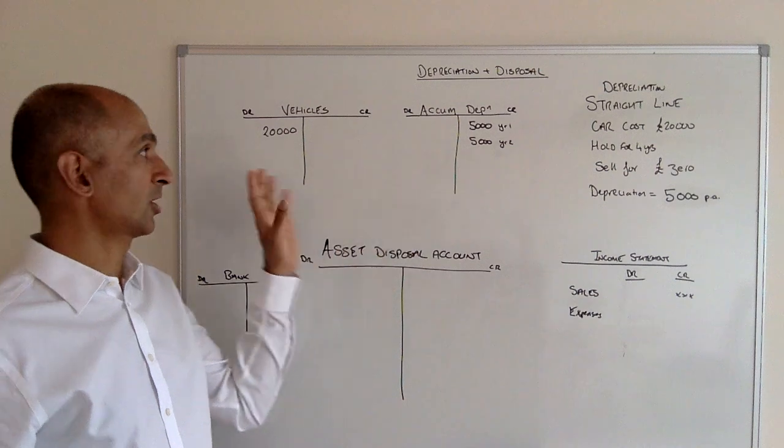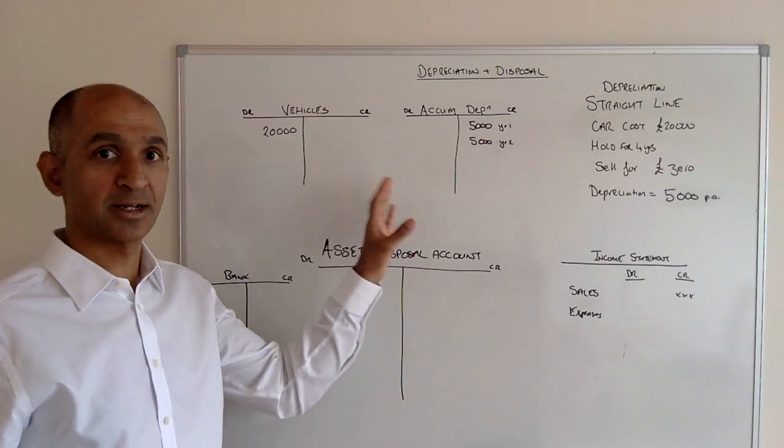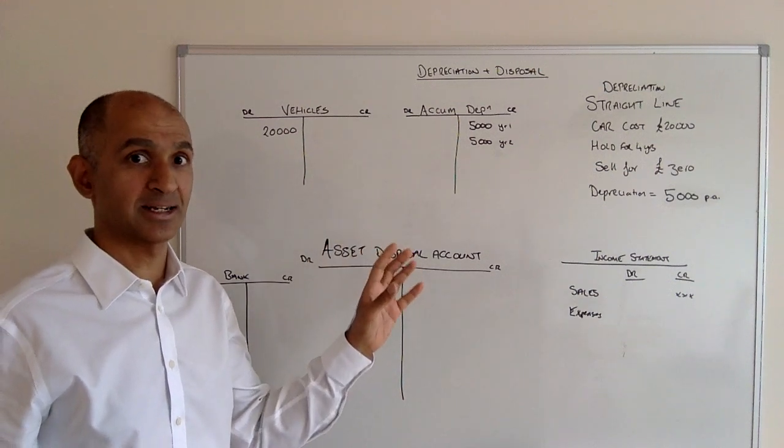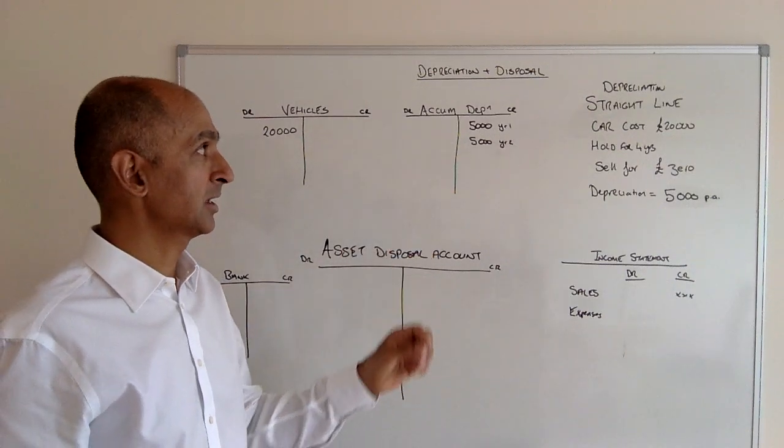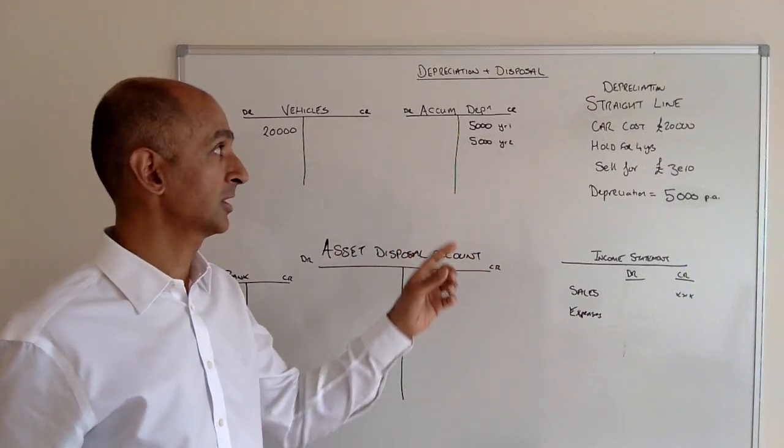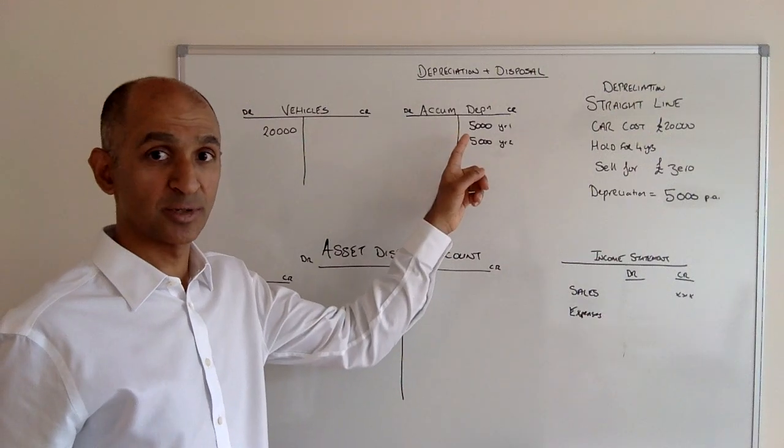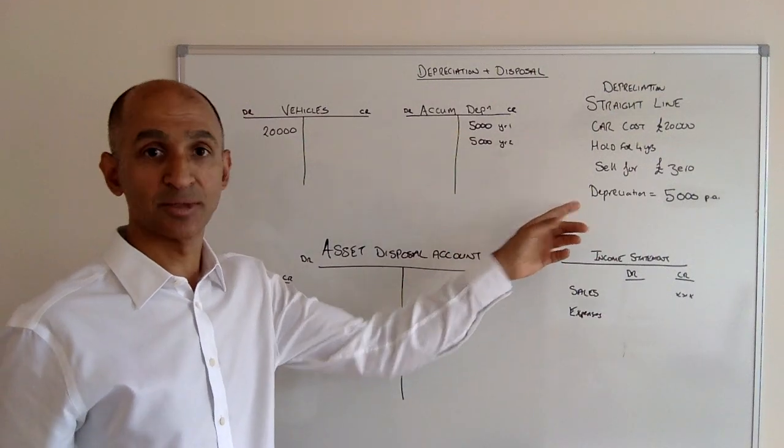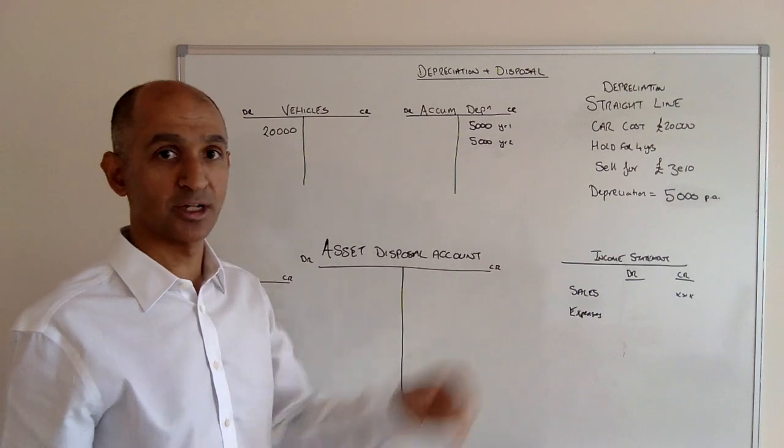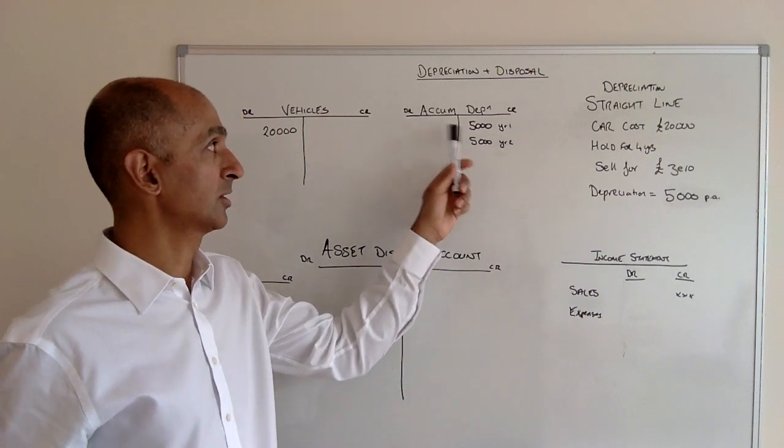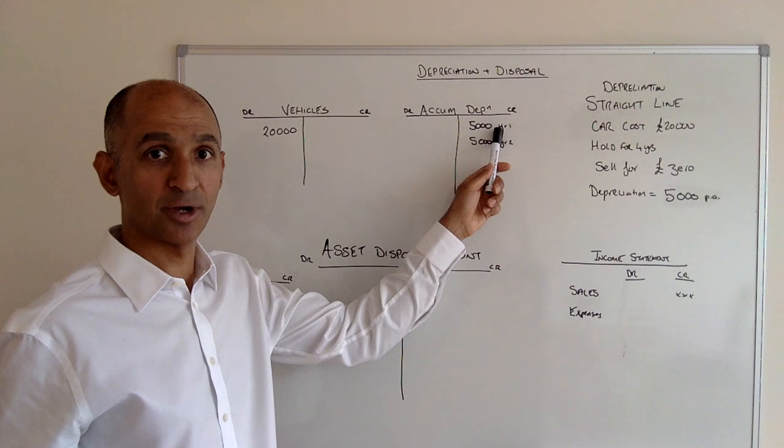Depreciation is not put into the asset account; it's put into a separate account which is a contra-asset account, and that is called accumulated depreciation. Each year that depreciation is charged, it goes into accumulated depreciation for the amount determined for that asset at the start. In this case, £5,000 per year. In year one, accumulated depreciation of £5,000.